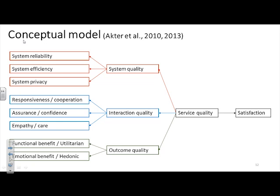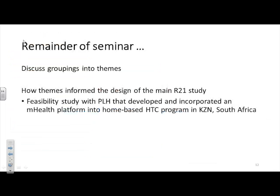This is a model specifically for mHealth systems based on the idea that people's satisfaction with the system has to do with the quality of the system, which can be broken down into three main components. The first is the quality of the system itself — how reliable is it, does it provide patient privacy. The second is the interaction quality — the system might be reliable but not easy to interact with, kind of clunky. And the third is what kind of outcomes you get out of the system — does it meet the needs of what you're looking for.